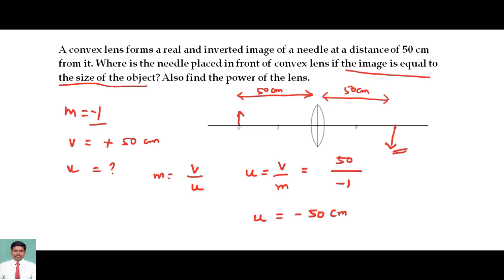So once we calculated the U, we now try to find the focal length. From the diagram it is very simple. If 2F is 50 cm, then F is half the value, which is 25 cm.